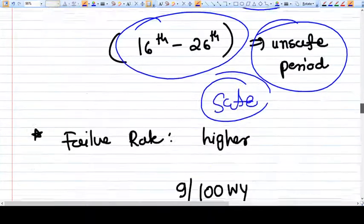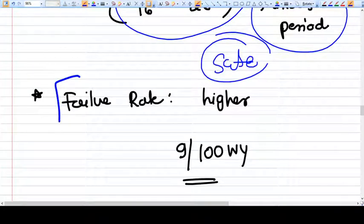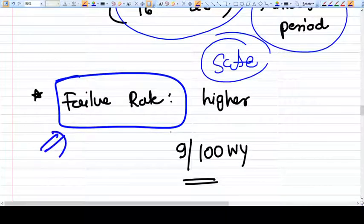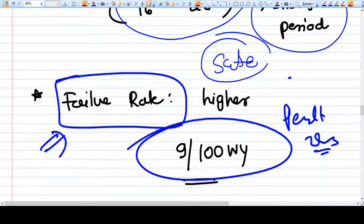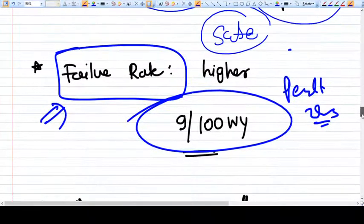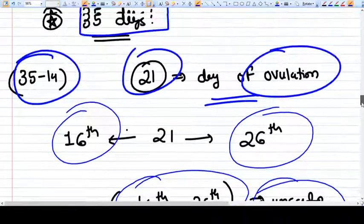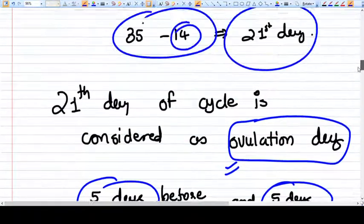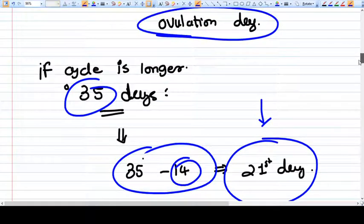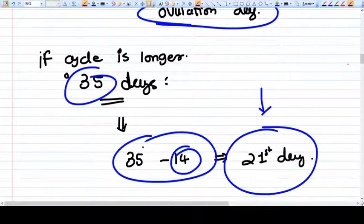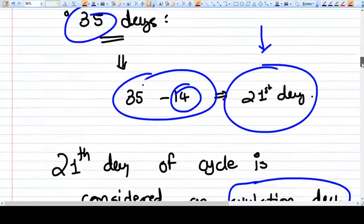The failure rate of calendar method is very high, 9 per 100 woman-year. This is the Pearl index. We will discuss it in later video. But again, what I am trying to tell you is if the couple is really motivated and very educated and want to understand how things work, they have compliance according to that method, then only they can use this method.